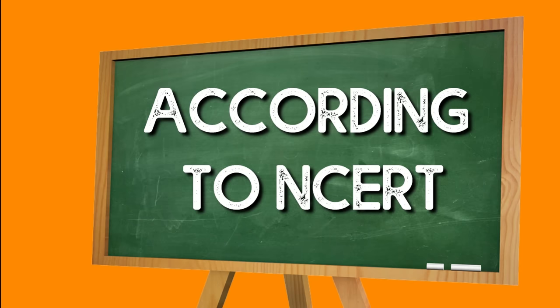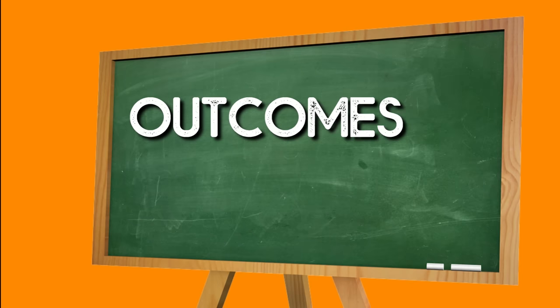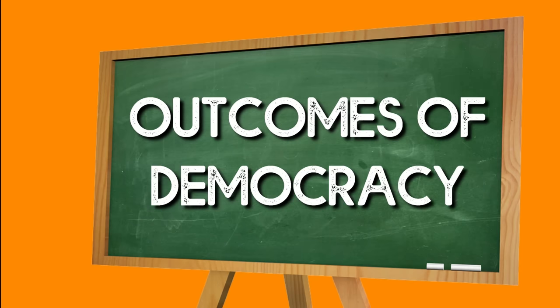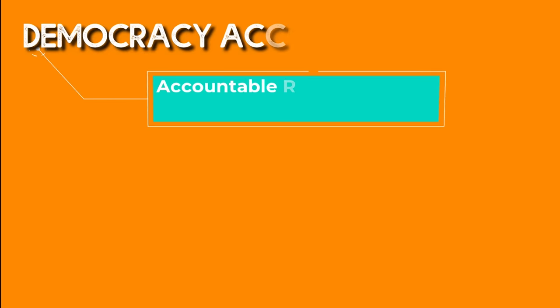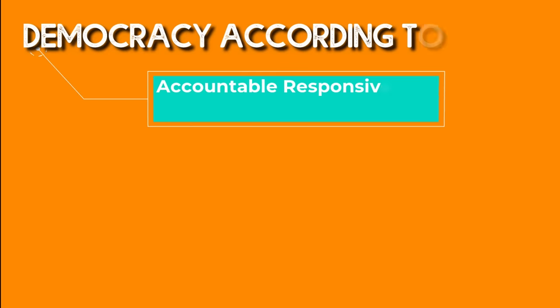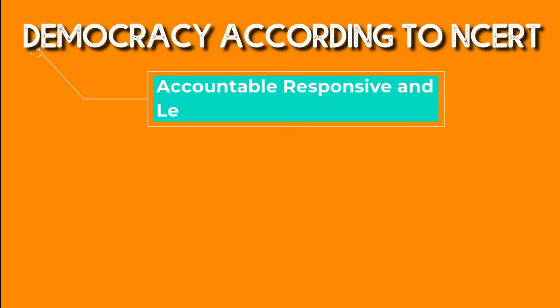Now let's read the outcomes of democracy. Point number one: Accountable, Responsible, and Legitimate Government. We will divide this point into two parts.